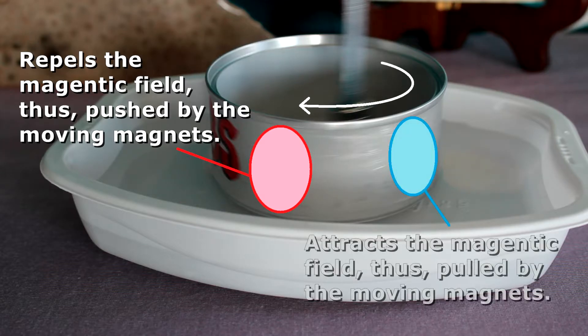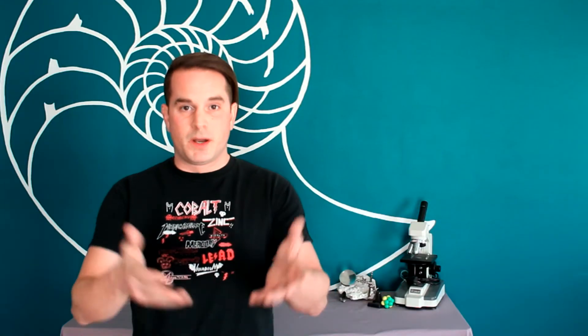And any part of the can that the magnets are moving away from, well they're resisting that change by producing a field that's attracted to the magnet. As long as we're thinking about it the right way, we can see that Lenz's Law is working just fine.